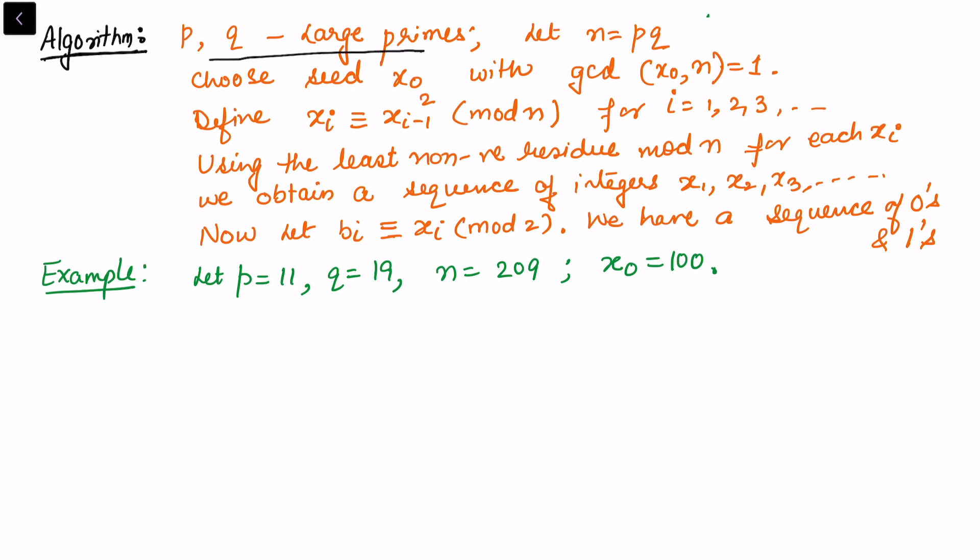can choose the seed x naught with the gcd of x naught and n is equal to 1. I'm going to take this non-linear congruence as I've explained - this is something related to discrete log problem.